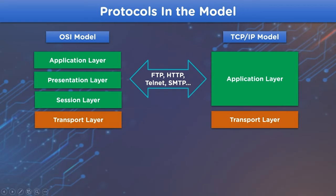The transport layer from the OSI model refers to the transport layer in the TCP/IP model, where they apply protocols such as TCP (Transmission Control Protocol) and UDP (User Datagram Protocol).